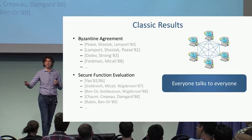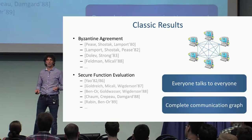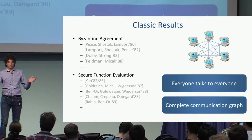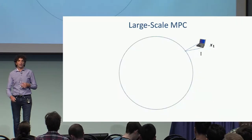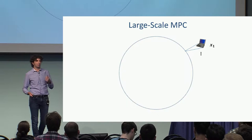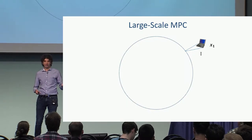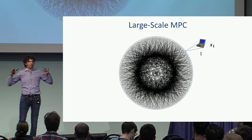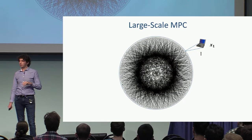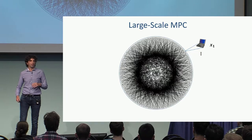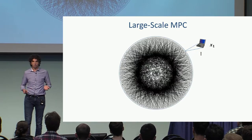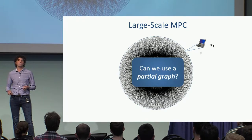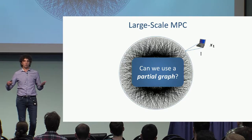If you look at the communication graph of the protocol, we have a complete graph. That's okay if we have a small set of parties. But what happens if we have many, many parties — a large-scale setting of secure computation? If we have a complete graph, that might be a big overhead. A very natural question is: do we actually need this overhead? Maybe we can use a partial communication graph and still compute the function securely.